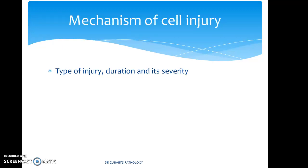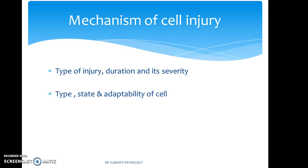However, if the injury stimulus is strong, it can be lethal and the cell may die instantly. It also depends on the type, state, and adaptability of the cell. For example, cardiac muscle is highly susceptible to hypoxia — cardiac myocytes will die almost immediately if deprived of oxygen. Whereas skeletal muscle fibers of the periphery, such as the limbs, are robust and can withstand hypoxia for a much longer time.